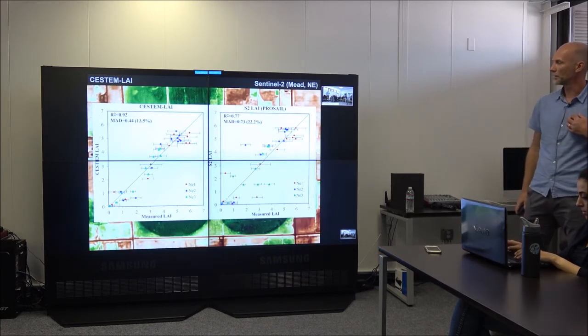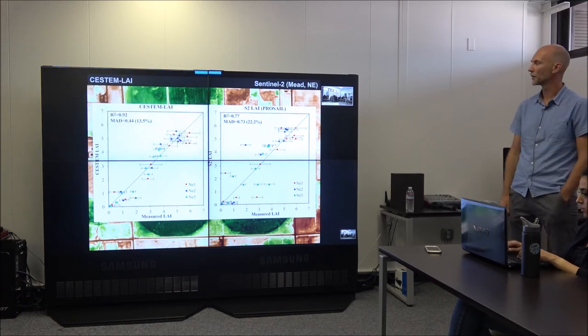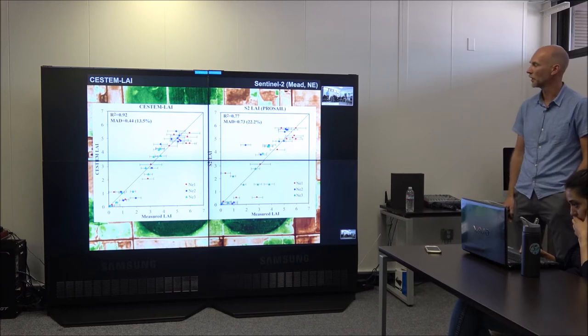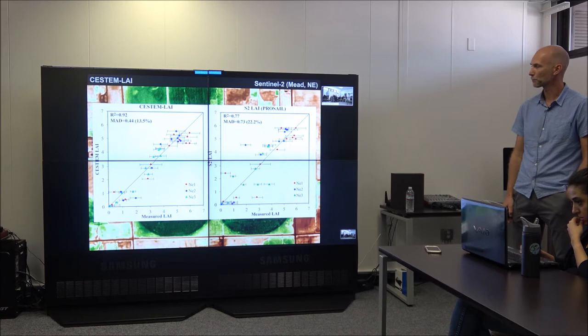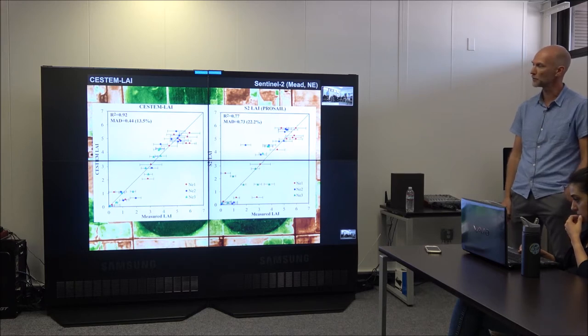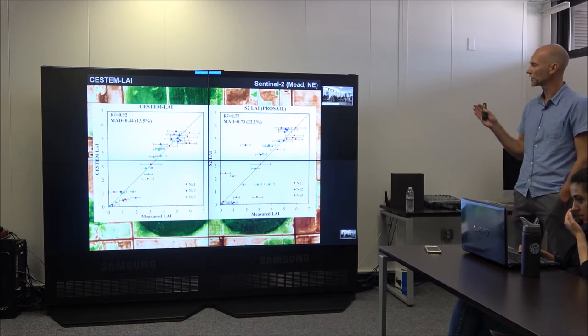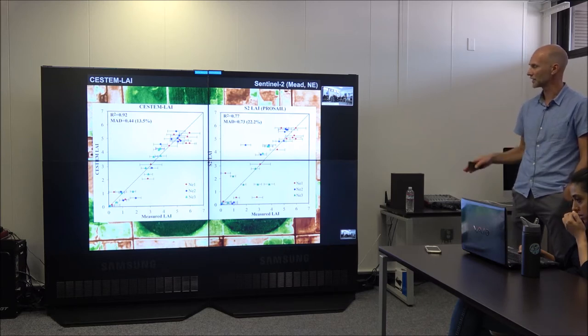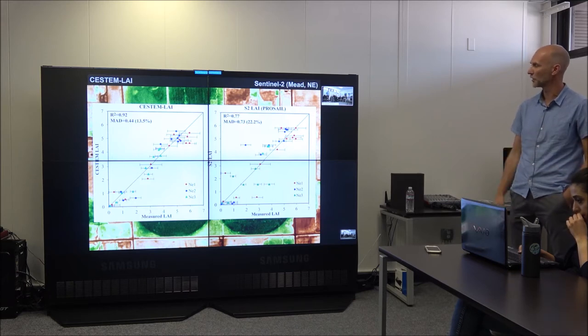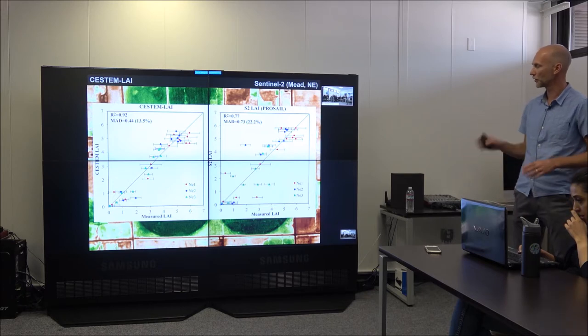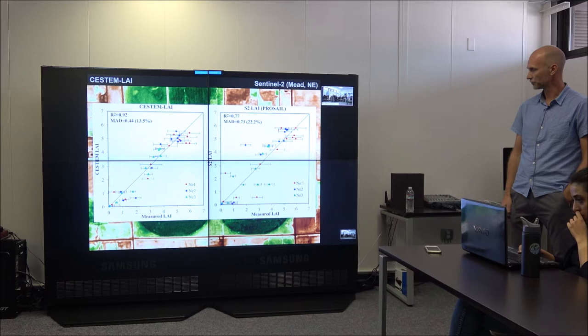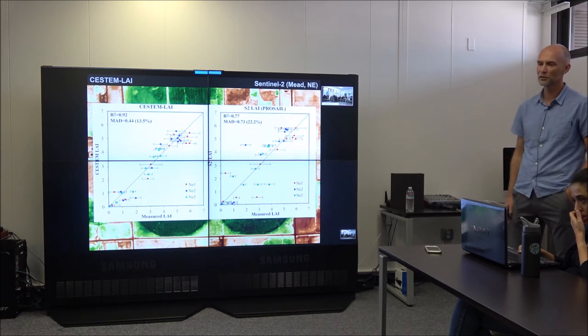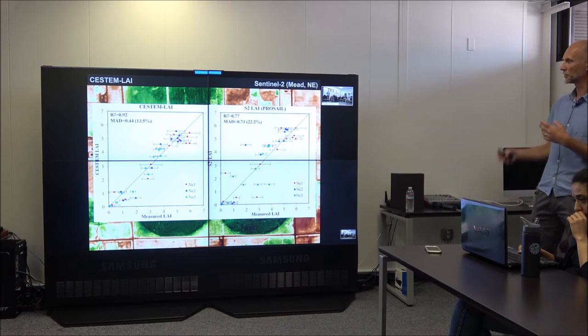So how good are these estimates? So this shows an evaluation of the CubeSat LAI retrievals against in-situ measurements over three cornfields in Nebraska. So, the CESTEM is, in this case, able to quite accurately reproduce your LAI with an R-square of 0.92, and the mean absolute difference of about 13.5%. If you only have Sentinel-2 data, the results are not as good, because you're going to miss periods in the green-up season and during senescence, where you don't have sufficient temporal coverage to probably match your in-situ measurements. So it's going to create a spread in your retrievals. So again, that's a good example of the benefit of having that daily revisit, but you really need your good Sentinel-2 retrievals to kind of constrain it. So it's kind of a synergistic approach.